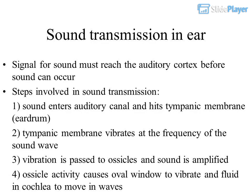For sound transmission in the ear, the signal must reach the auditory cortex before sound can be perceived. Steps 1–4: Sound enters the auditory canal and hits the tympanic membrane (eardrum). The tympanic membrane vibrates at the frequency of the sound wave. Vibration is passed to the ossicles and sound is amplified. Ossicle activity causes the oval window to vibrate and fluid in the cochlea to move in waves.